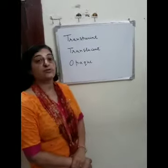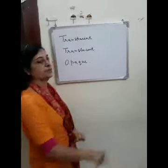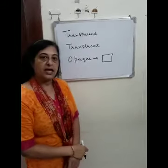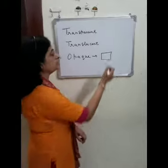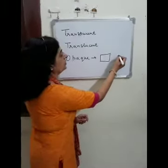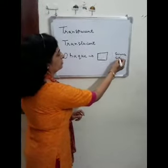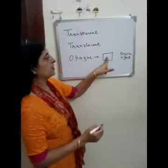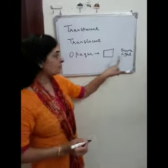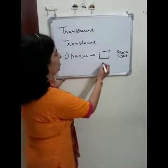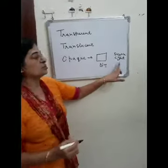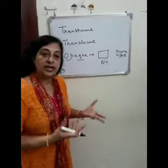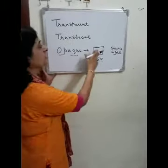Through an activity, we will find out the difference between these three types of objects. First, take a piece of paper and try to see through it towards a source of light. You will find that you are not able to see the source of light, because paper is an opaque object — it does not allow light to pass through it.